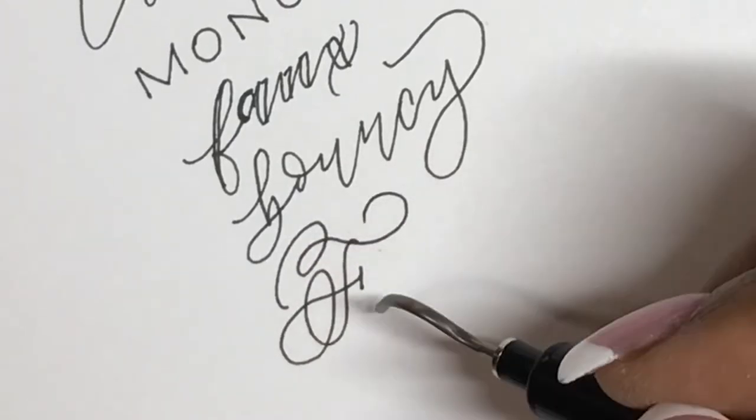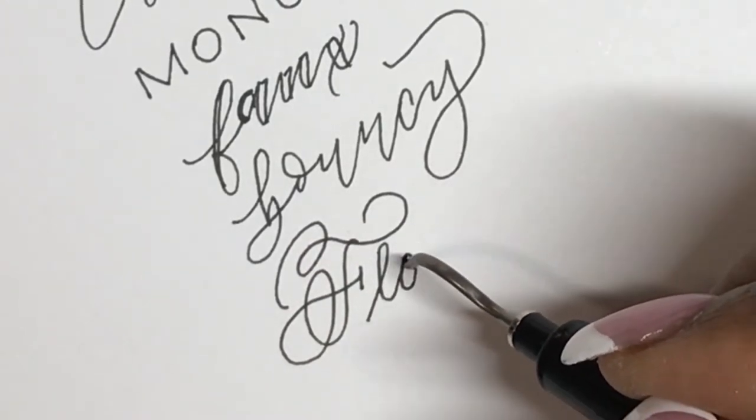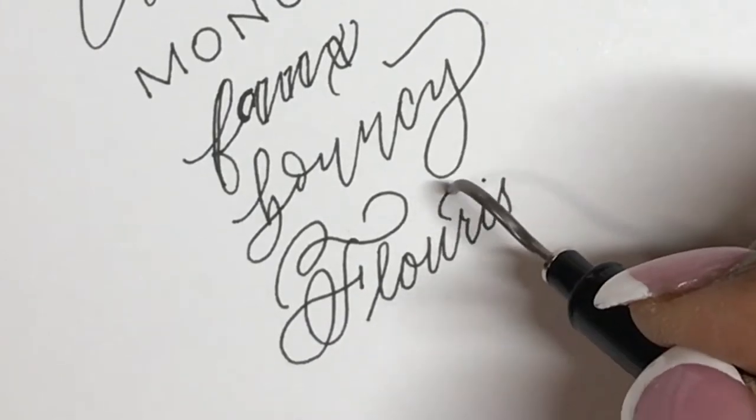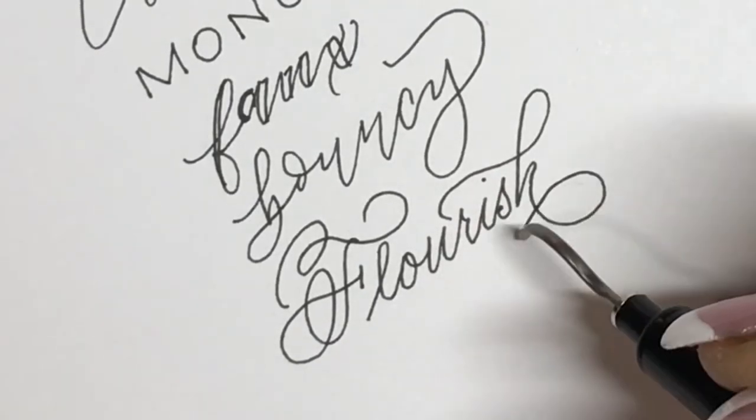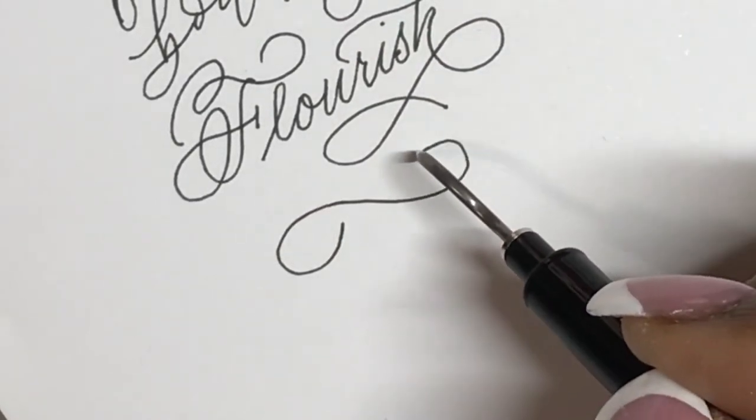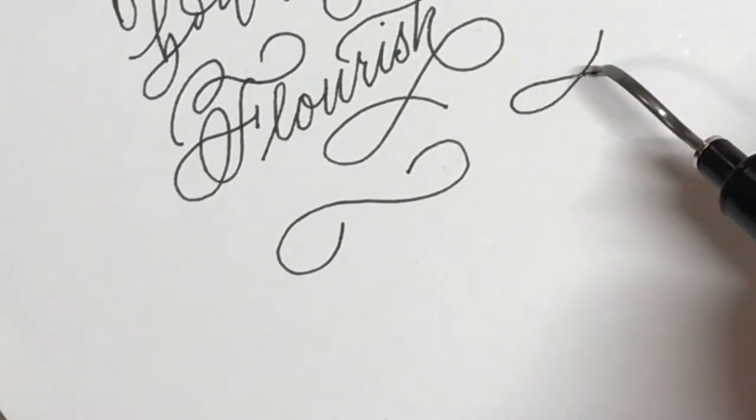And when I say a lot of control, I mean a lot of control without having to move my hand. I don't really have to move my wrist. I don't have to twist my hand around. My hand can stay in one position and kind of glide over the paper and I'm all good.